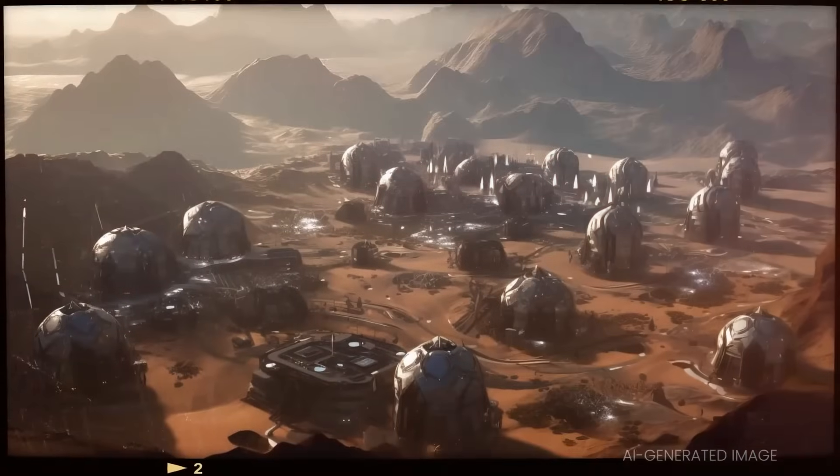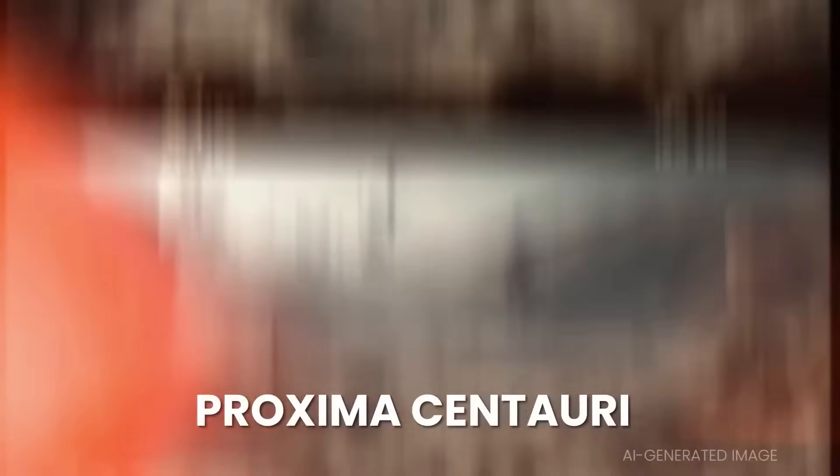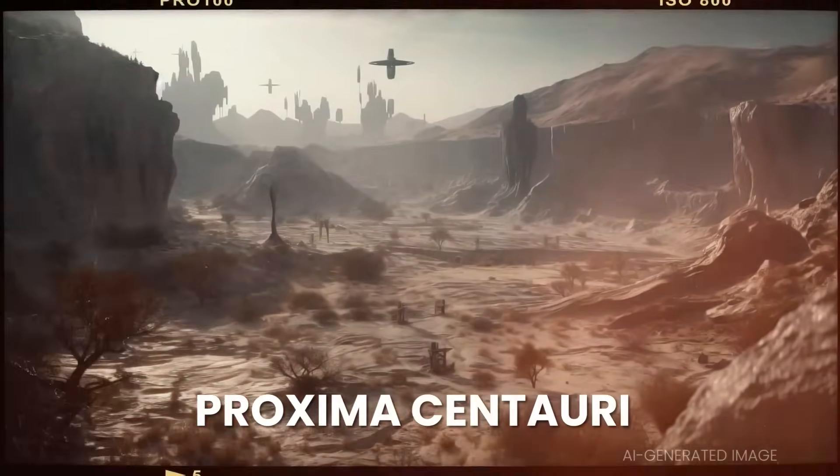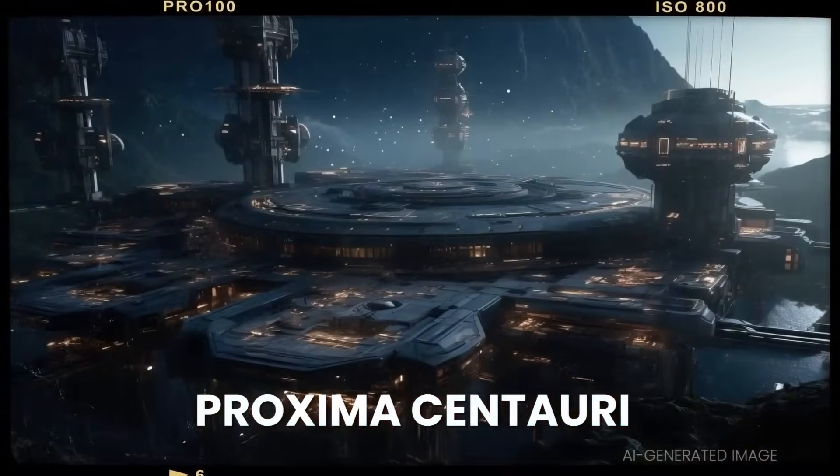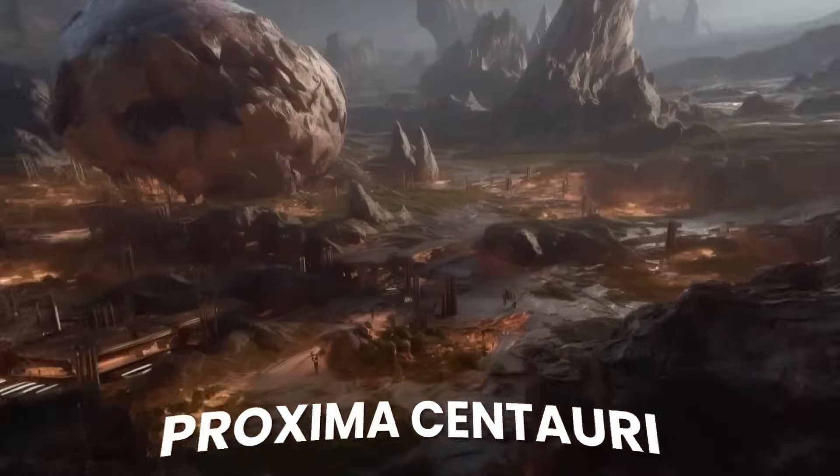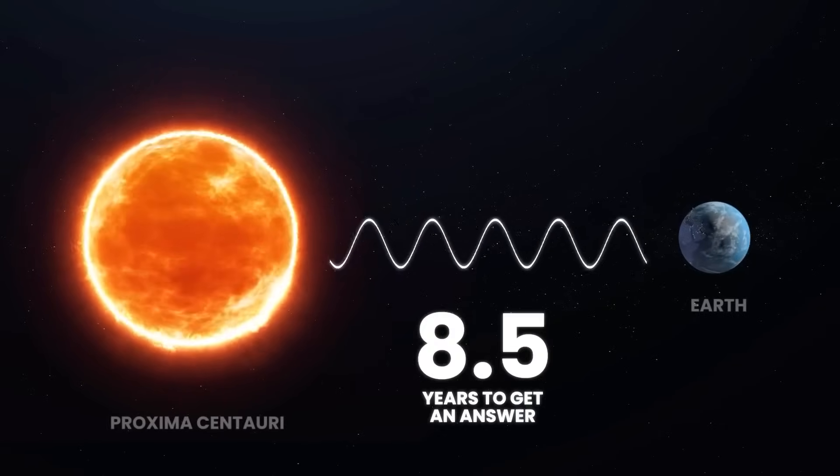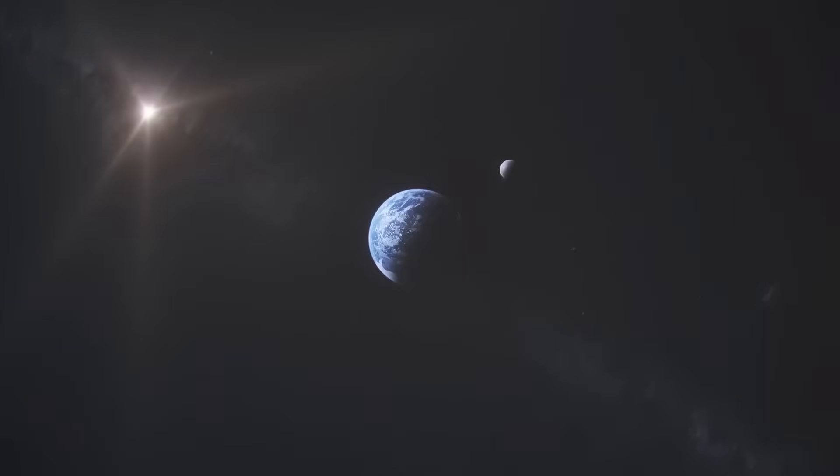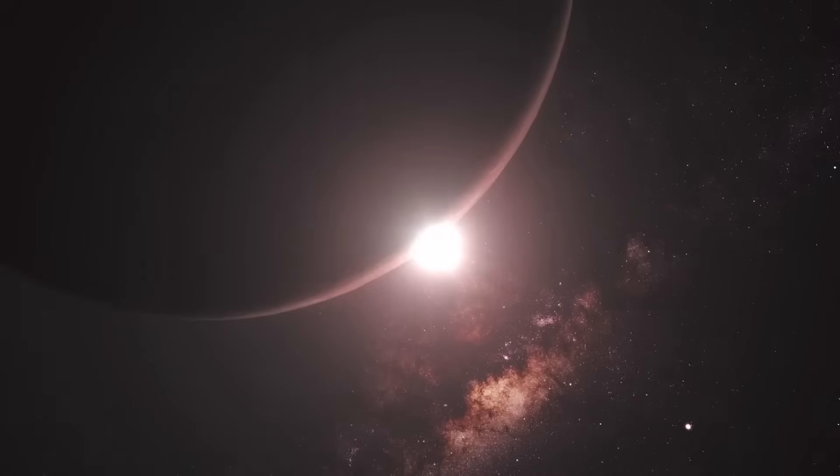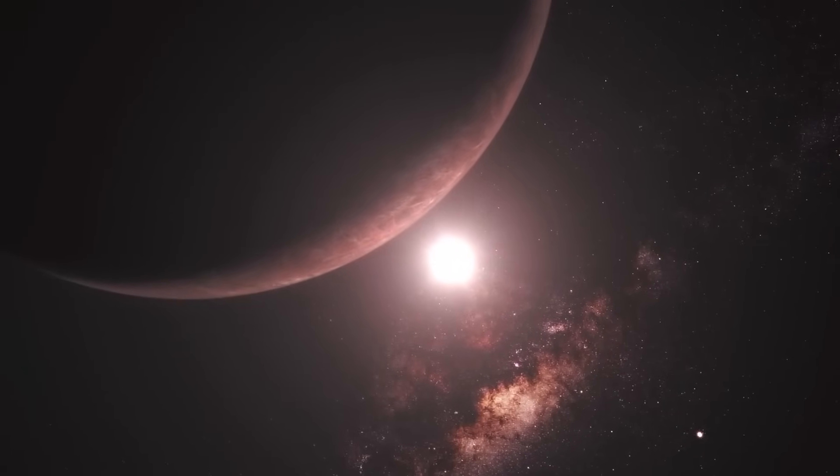Imagine for a moment that there's a colony on Proxima Centauri, the closest exoplanet to Earth. If they radioed Earth to ask how we're doing, it would take 4.2 years for their message to reach us, and another 4.2 years for our reply to reach them. This means it would take a total of eight and a half years for them to receive an answer. The immense time gap makes it difficult to envision what kind of conversation could unfold between Earth and the colony, and that's just from our nearest neighboring system.